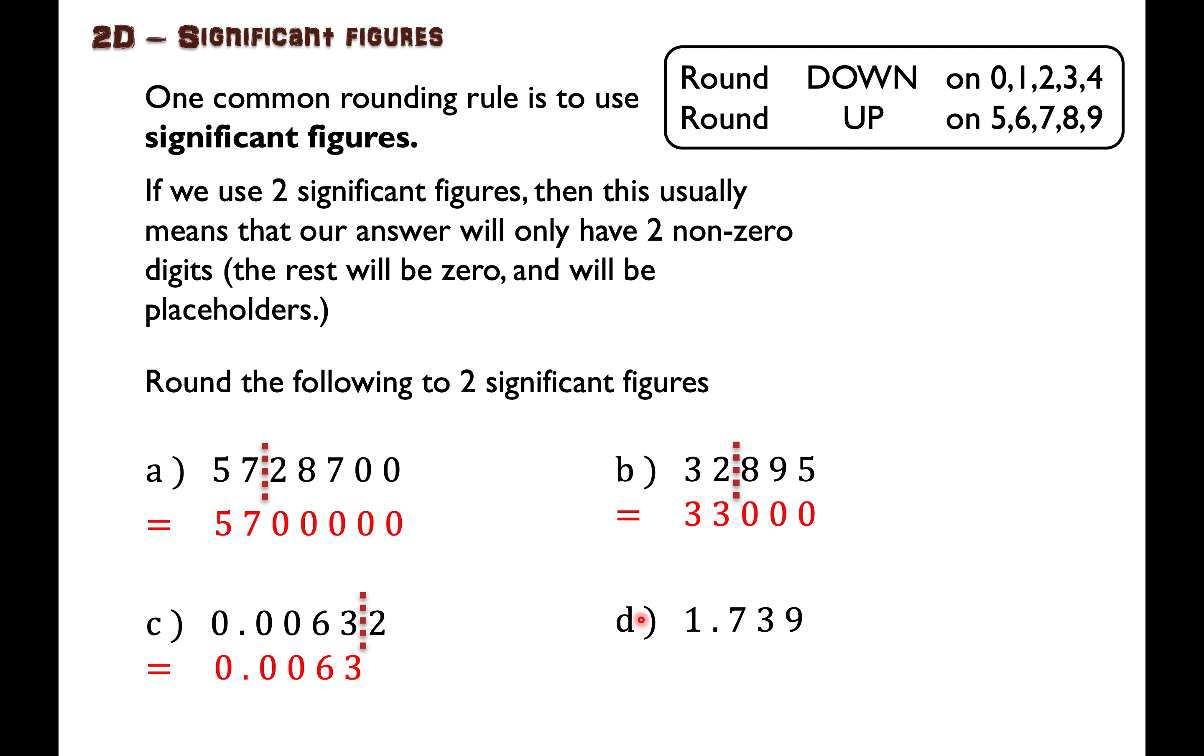Alright, this one here. Go from left to right. There's my first digit. There's my second digit. So I need to round right here. What do I have? After this line is a three and on a three I round down. So this will all vanish and 1.7 will stay the same.